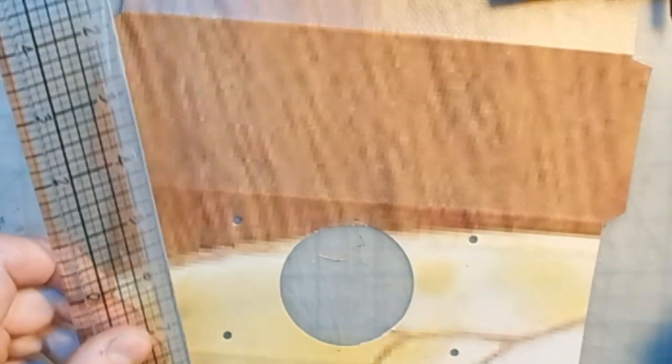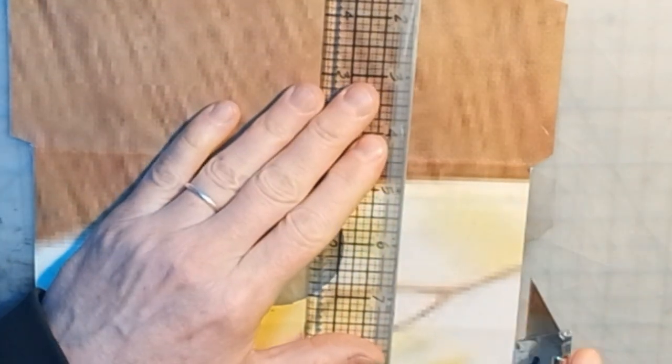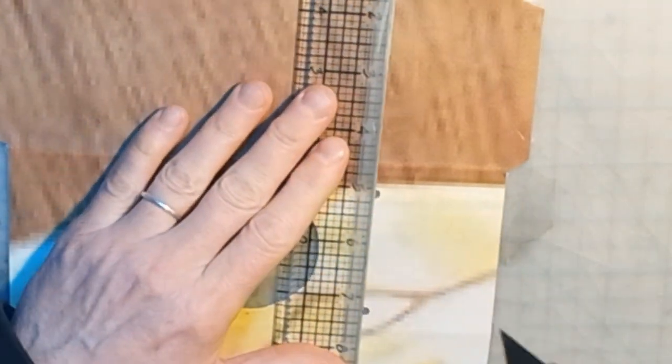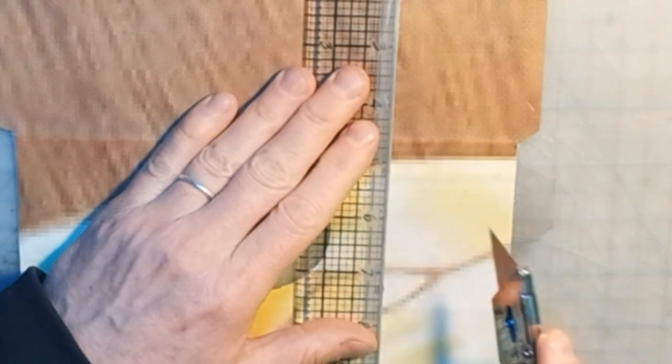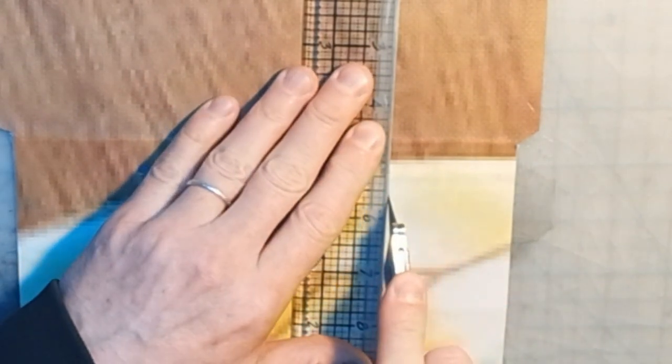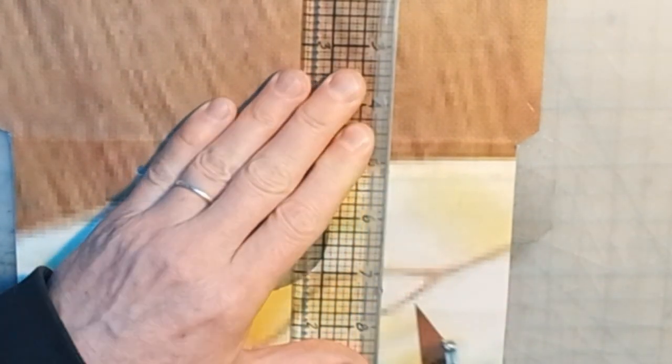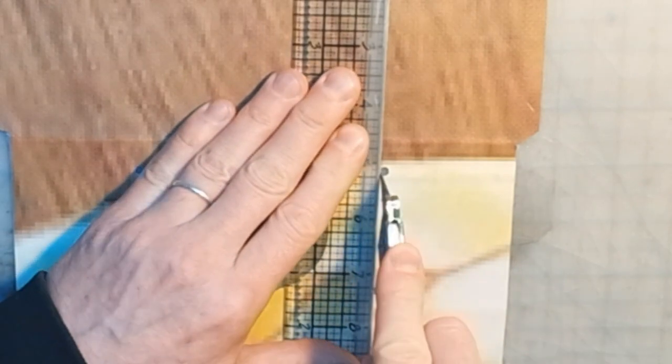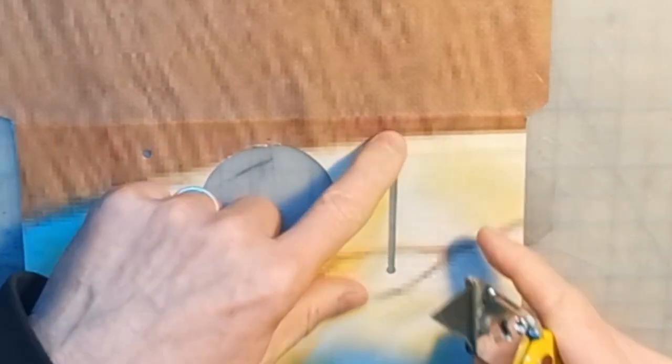And then I'll line them up with my ruler and cut out the space in between them. So that makes the slit for the cards.